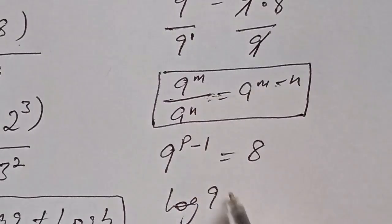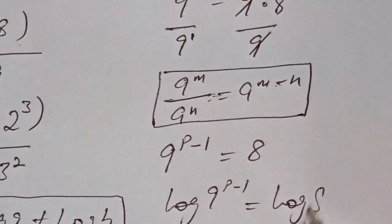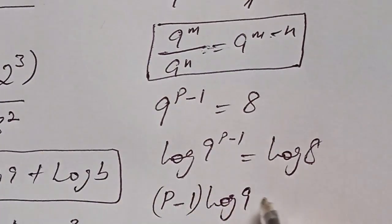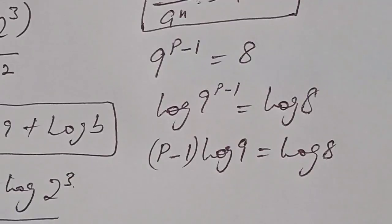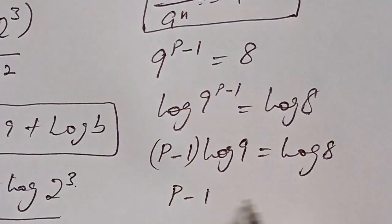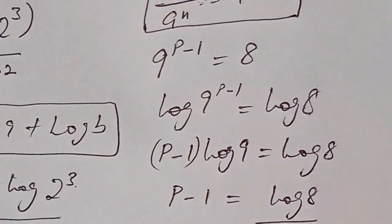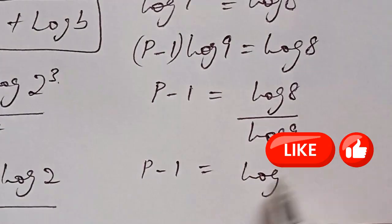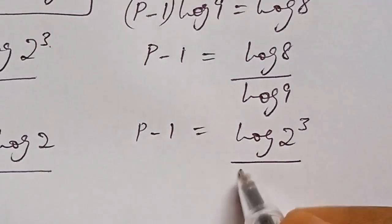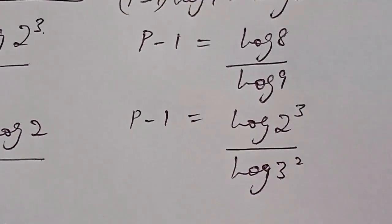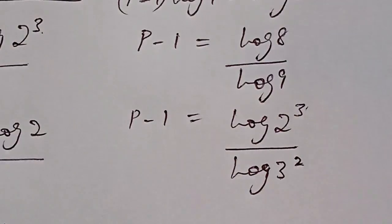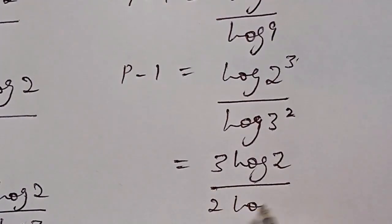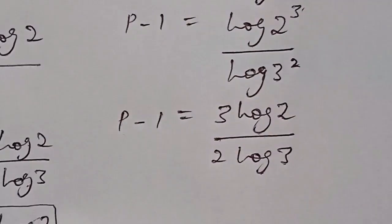We take the log of both sides: log of 9 to the power of (p−1) equals log 8. Moving the power down to the base gives (p−1) log 9 equals log 8. Dividing both sides by log 9 we have p minus 1 equals log 8 over log 9, which simplifies to log(2³) over log(3²). Bringing the powers down gives 3 log 2 over 2 log 3.